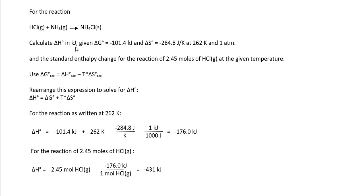We're asked to calculate delta H in kilojoules. We're going to use this equation and do some algebraic rearranging to determine delta H. After substituting the values into this rearranged equation, we have a delta H of negative 176 kilojoules.